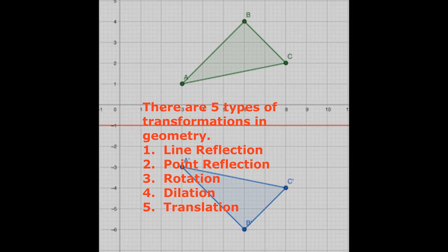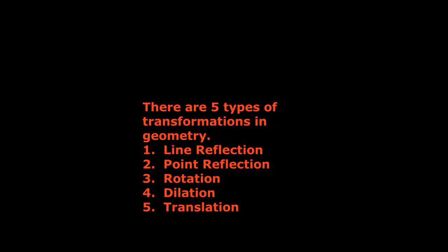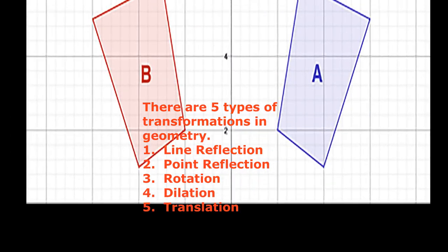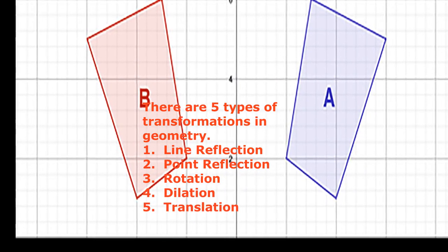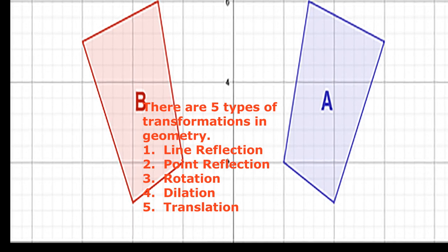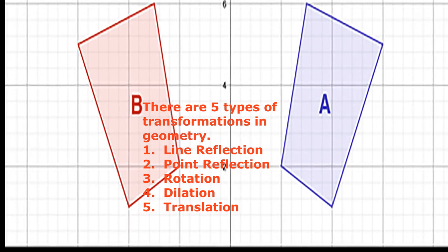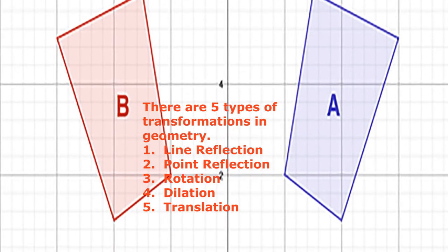Three, rotations which turns an object about a fixed point called the center of the rotation. Rotation may be clockwise or counterclockwise. Four, dilations which is a transformation that changes the size of the image, but shape remains the same.